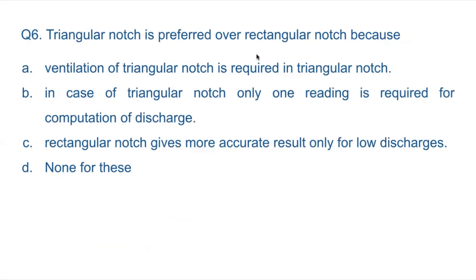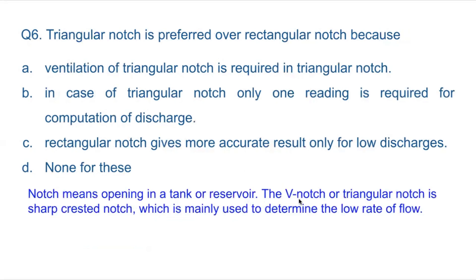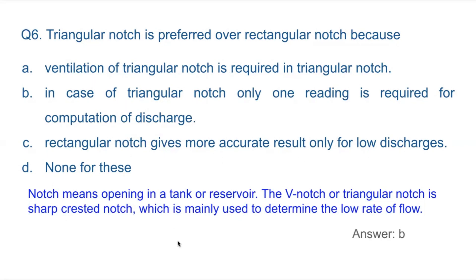Question 6: Triangular notch is preferred over rectangular notch because — a notch is an opening in a tank or reservoir. The V-notch or triangular notch is a sharp-crested notch mainly used to determine low rates of flow. Triangular notch is preferred over rectangular notch because in case of a triangular notch, only one reading is required for computation of discharge. Answer: B.